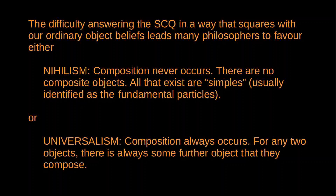Second, there is compositional universalism, which says that for any two objects there is always some further object that they compose — composition is completely unrestricted. So my left index finger plus the moon is an object, and it's just as legitimate an object as a hand or a chair. On this view, ordinary objects do exist, but there's nothing metaphysically special about such objects — there's a whole load of other objects like left index finger plus the moon plus Donald Trump's hair, which also has the same metaphysical status as a hand. So the universalist is also going to suppose that we are seriously mistaken about ordinary object facts.